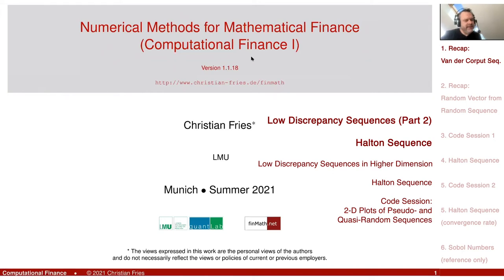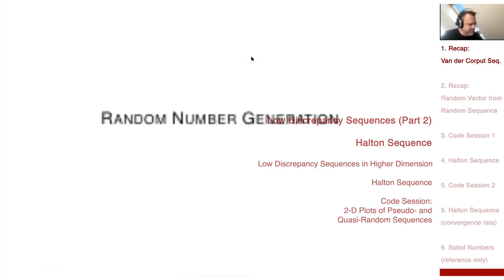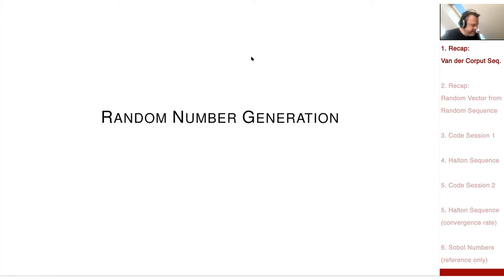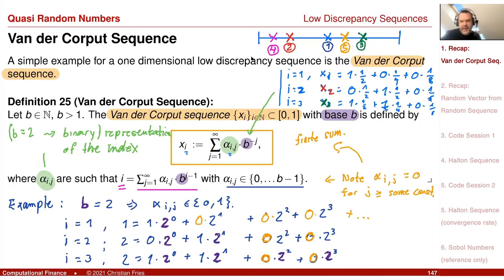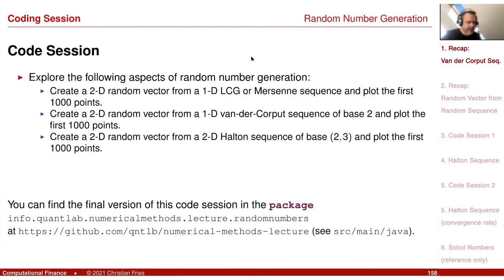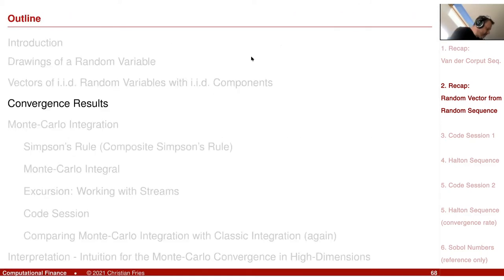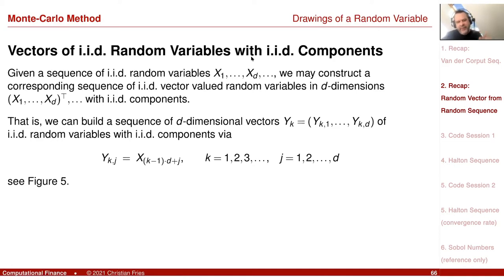We had the first look at a quasi-random number sequence. So we were in the chapter of random number generation. We started looking at low discrepancy sequences, and our first sequence was the Van der Corput sequence. Now I'd like to do another computer experiment. That experiment goes back to a session we had a while ago — let me check if I can find it. And that was here.